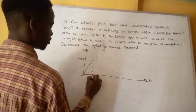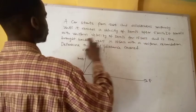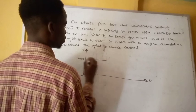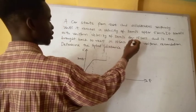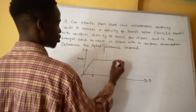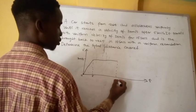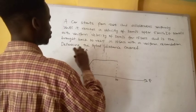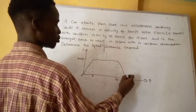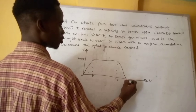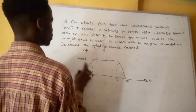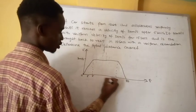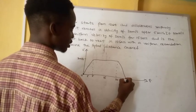From 5 seconds the velocity remains constant at 30 meters per second for 15 seconds, reaching the 20-second mark. Then it is brought back to rest over 10 seconds, reaching the 30-second mark. So from 0 to 5 seconds is the acceleration phase, 5 to 20 seconds is the uniform velocity phase, and 20 to 30 seconds is the deceleration phase.